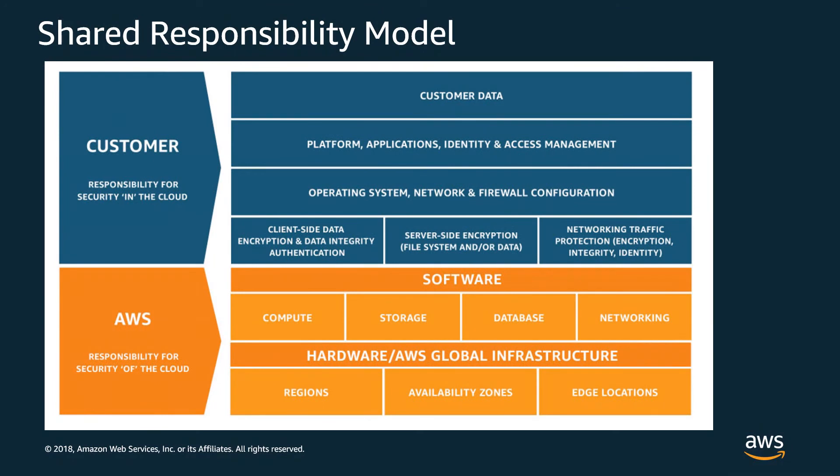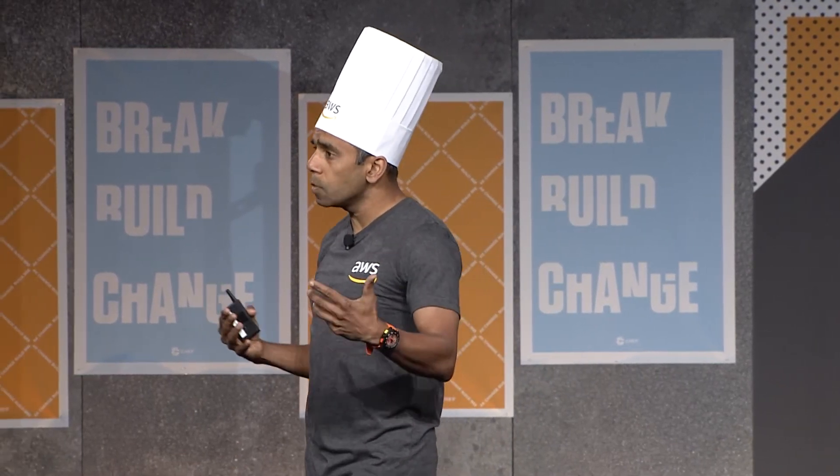At AWS, we have this concept of a shared responsibility model. Security and compliance are a shared responsibility between AWS and customers. AWS takes care of the host operating system, virtualization layer, and the actual security of the physical infrastructure. Customers on the other side take care of the security of their application, choosing the right application stack, security, gateways, firewalls, and things like that. This gives a very flexible model between AWS and customers to choose the right stack that fits for their needs.